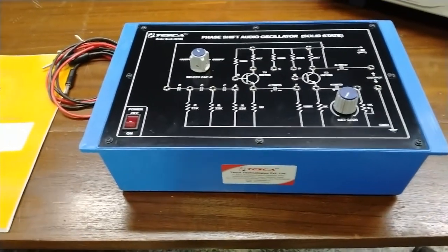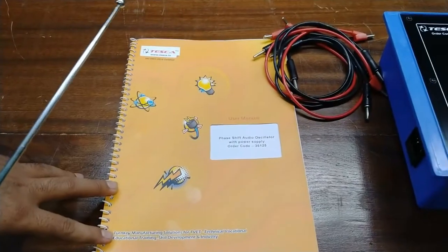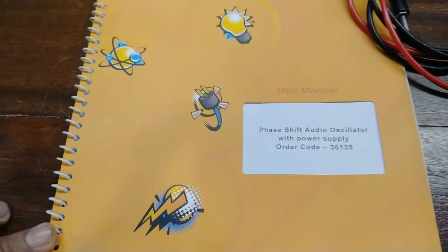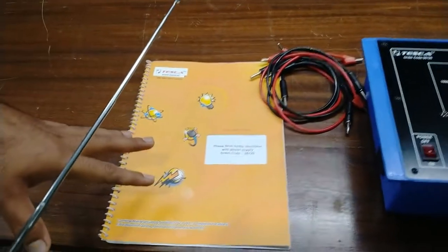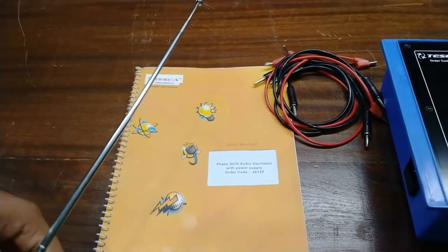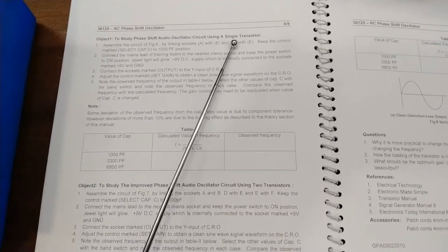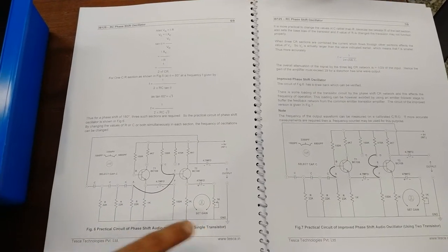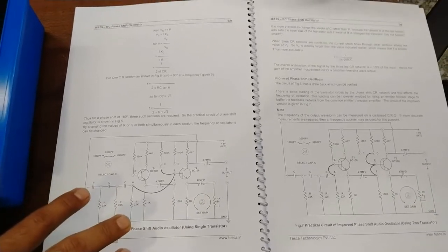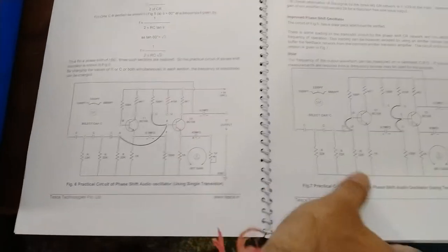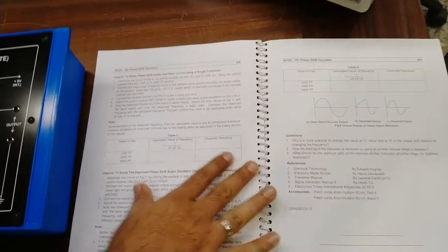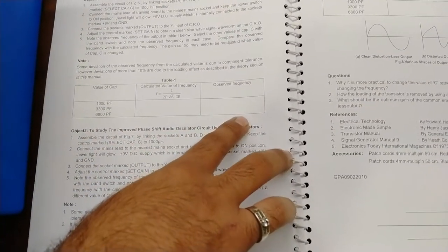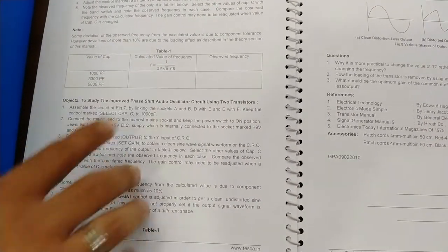We are also providing a user manual with complete descriptions of the experiments, observation tables, and calculations for this circuit. All details about the circuit and the phase shift audio oscillator are provided in the user manual. Object one is to study the phase shift audio oscillator circuit using a single transistor. We use an RC network with a single transistor to provide the phase shift output. For different values of capacitor, we observe the frequency at the oscilloscope or DSO and note them in the observation table.